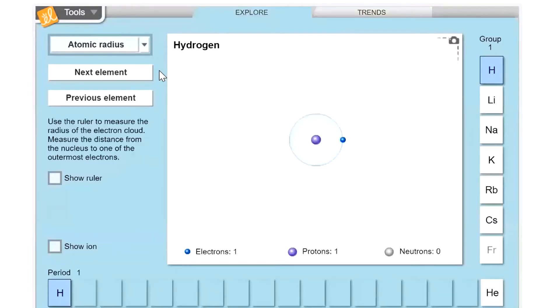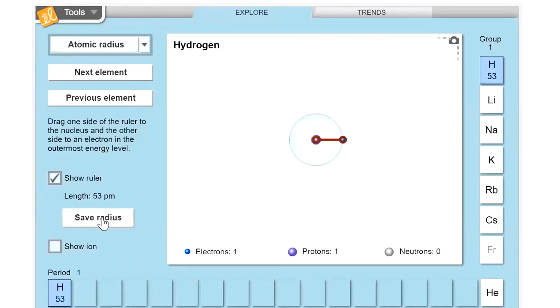Okay, so we're going to start with atomic radius. We're going to start with the first element, which is hydrogen. We're going to click here where it says show ruler. And we're going to go over this ruler. We're going to attach one end of it to the nucleus. And we're going to attach another to an electron on the outer shell. Okay, so it says right here that the length is 53 pm, which is a picometer. A picometer is a trillionth of a meter. So we're going to save that radius. And you now see that a number in picometers is shown for hydrogen.